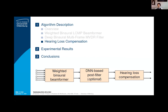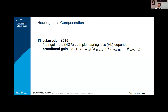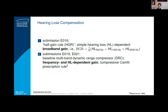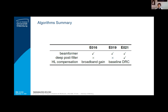Let's briefly continue with the hearing loss compensation stage. We are considering two different options. The first option used in submission E16 is a simple broadband gain based on the half-gain rule. The second option for submissions E19 and E21 is the baseline multiband dynamic range compressor, which uses frequency and hearing-loss-dependent gain based on the compressive CAM-FIT prescription rule. In summary, all submissions use the beamformer as the first stage; only E21 uses the deep post filter as the second stage. E16 uses the simple broadband gain, while E19 and E21 use the baseline DRC system.